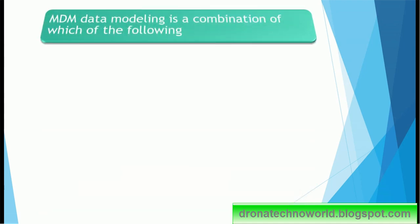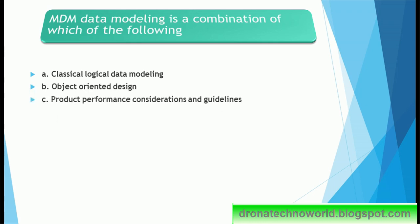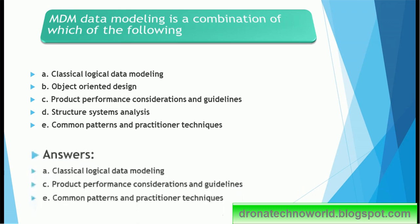Next question. MDM data modeling is a combination of which of the following: classical logical data modeling, object oriented design, product performance consideration and guidelines, structure system analysis, common patterns and practitioner techniques. It's a very good question about data modeling actually. No one asks this, but it's good to have the understanding. And this is for knowledge purpose.